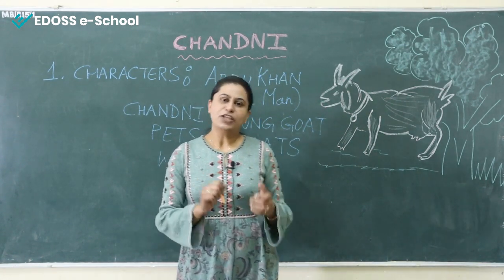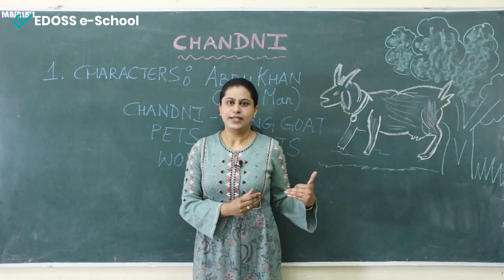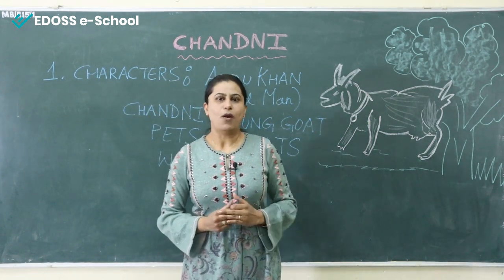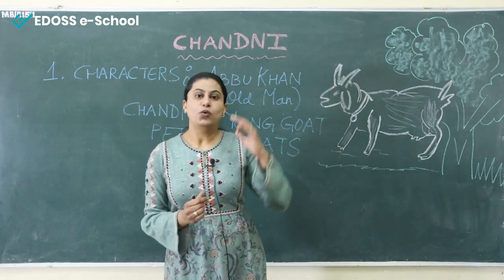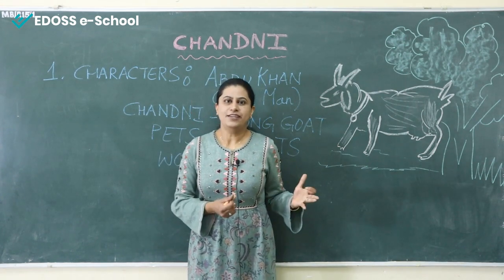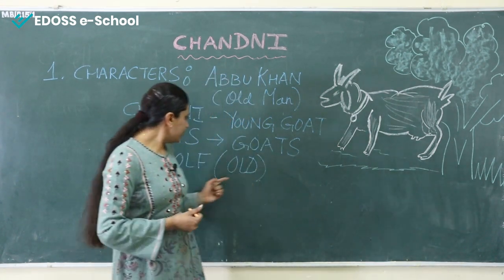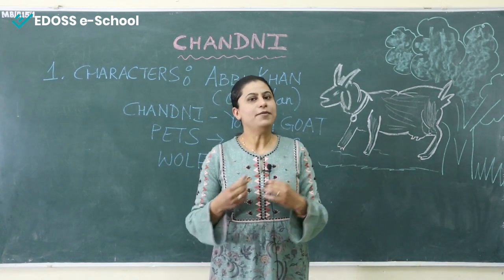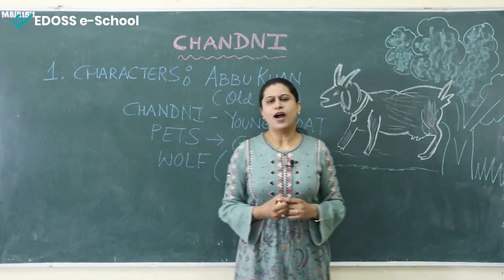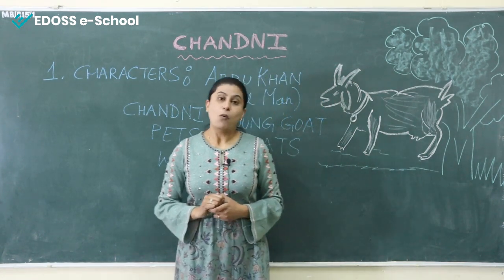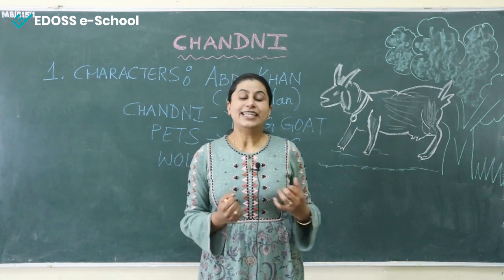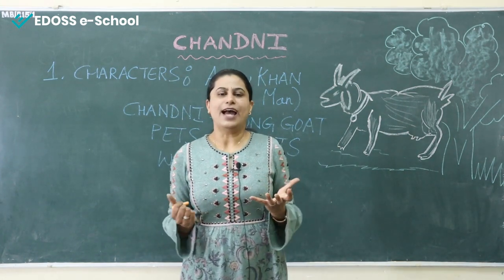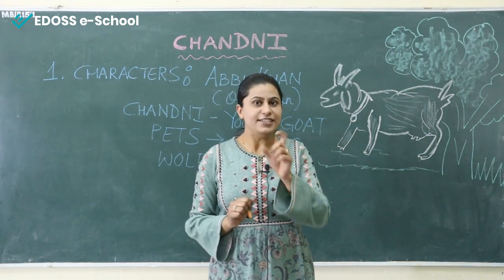But then what actually happened? Slowly and slowly, these goats — the pets of Abhu Khan — left him one by one. They all wanted to go to the hills. And there the main thing happened: the old wolf in the hills killed these goats one by one. Now Abhu Khan was depressed. He used to wonder — when I was taking care of these pets, then why did they leave me? This was a kind of mystery to him, and he could not find the answer.